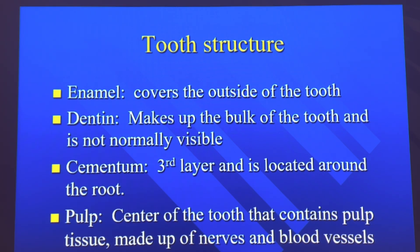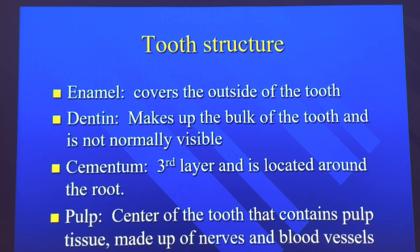The third layer is the cementum, located around the root. If you think of this in terms of the earth — you have the crust, mantle, and core. The crust is the outer harder surface, which is your enamel. The dentin would be the mantle, making up the bulk. Then you have the cementum encompassing everything from the center, and the pulp contains tissue, blood, and nerves.